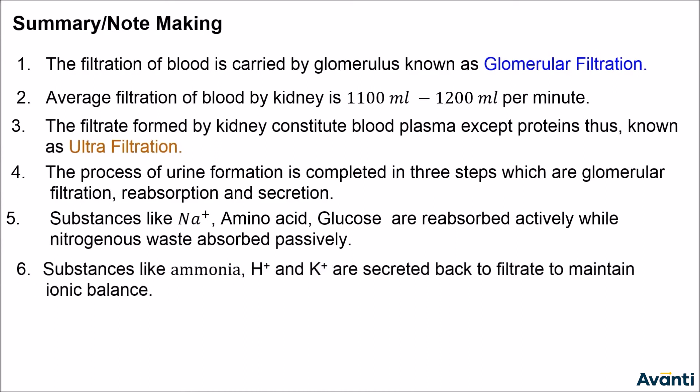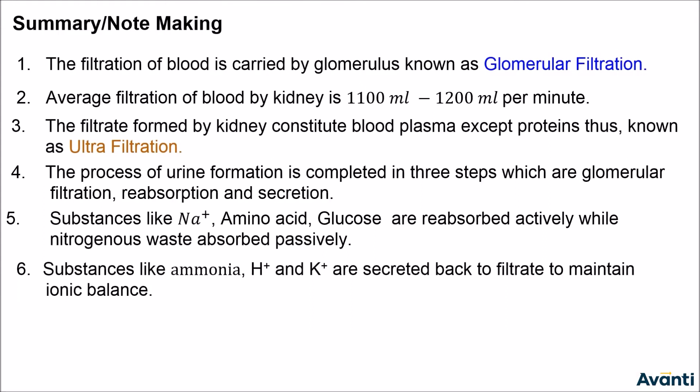Our next point is the substances like ammonia, H plus ion, and potassium ion are secreted back to the filtrate to maintain ionic balance. In the secretion process, ammonia, hydrogen ion, and potassium are secreted back to the filtrate, so the ionic balance is maintained.